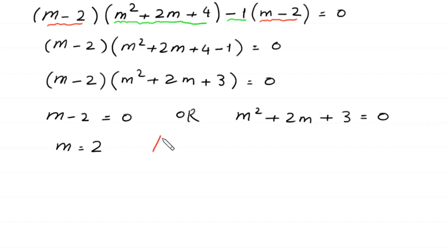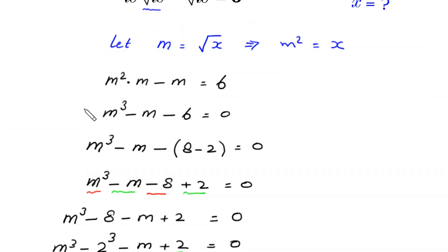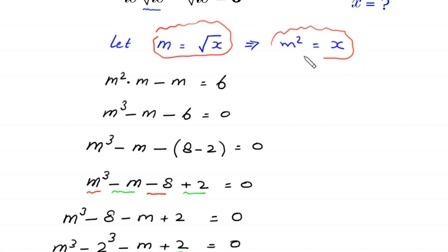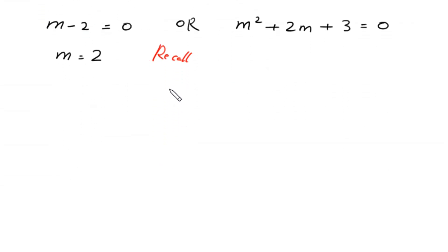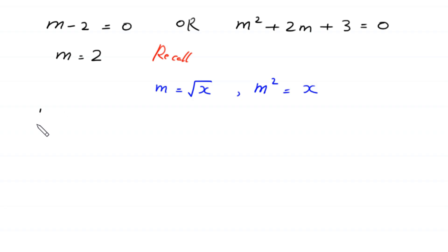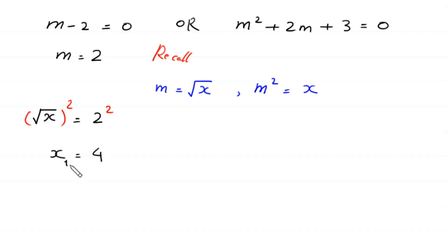From m minus 2 equals 0, we get m equals 2. Recalling that m equals square root of x and m squared equals x, if we put m equals 2 then square root of x equals 2. Squaring both sides gives x equals 4. This is the first solution.